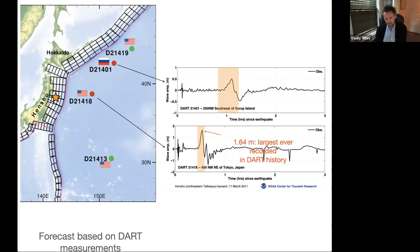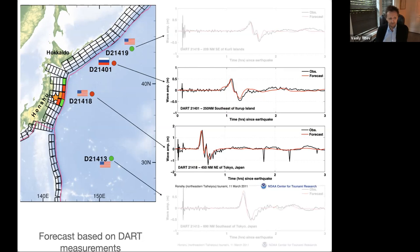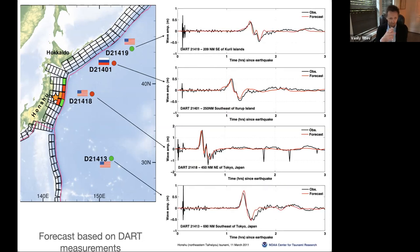We already had our least-squares inversion set up, so we were able to do the inversion based on just two DARTs — one US and one Russian. That gave us the solution shown in red: a combination of pre-computed unit sources that fits the data pretty well. When the farther-out DARTs reported, they verified this solution. That happened about an hour and 20 minutes into the event.